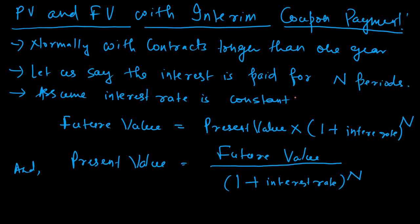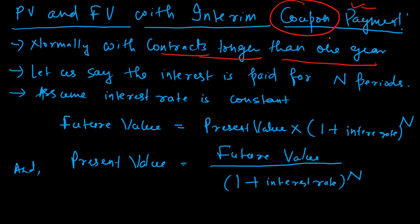So far we have only talked about a single time period, but there can be multiple time periods. We can receive interest at regular intervals. In finance, these regular interest payments are technically called coupon payments. Contracts longer than one year typically have coupon payments every year or every six months, and we assume the interest rate remains the same for all periods.